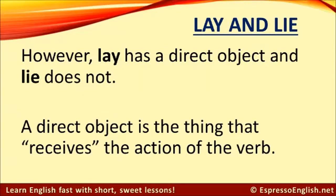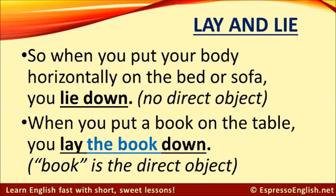However, lay has a direct object, and lie does not. A direct object is the thing that receives the action of the verb. So when you put your own body horizontally on the bed or sofa, you lie down — there's no direct object. But when you put a book on the table, you lay the book down. Book is the direct object.